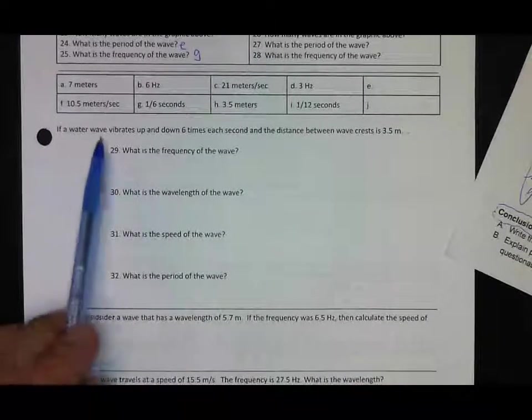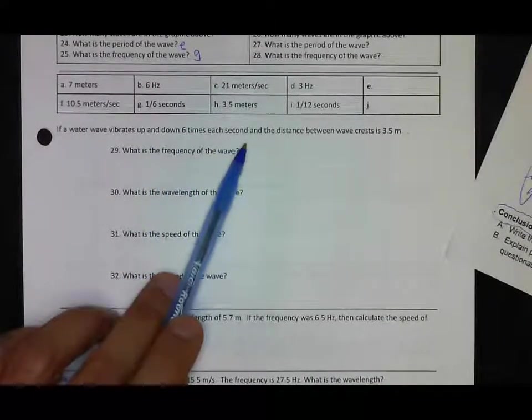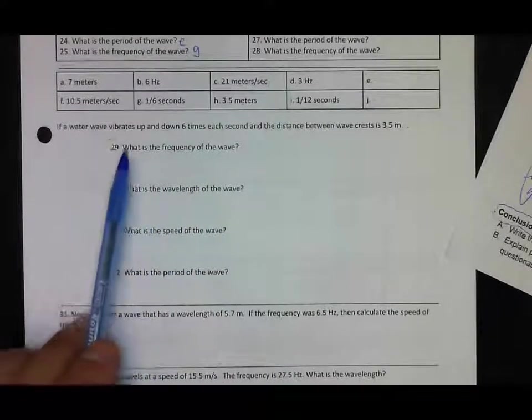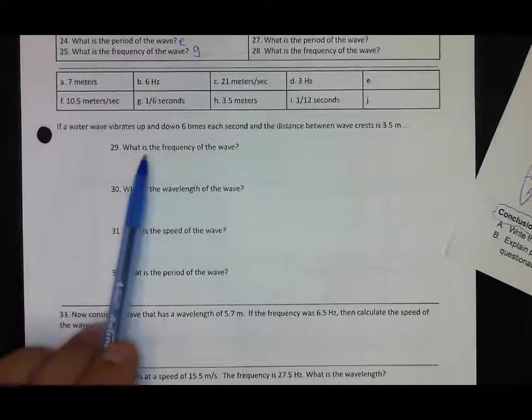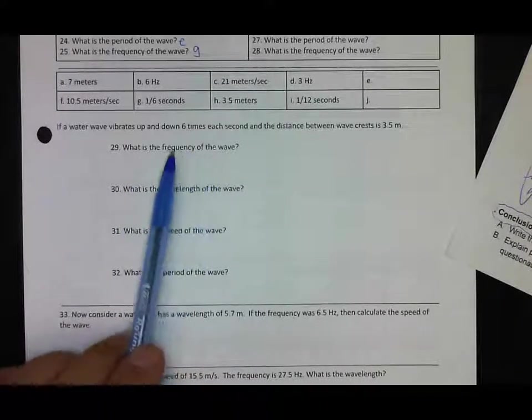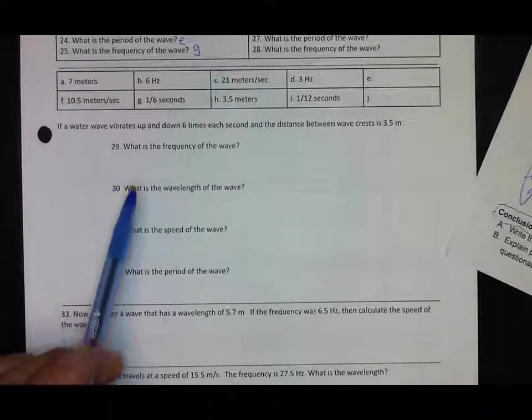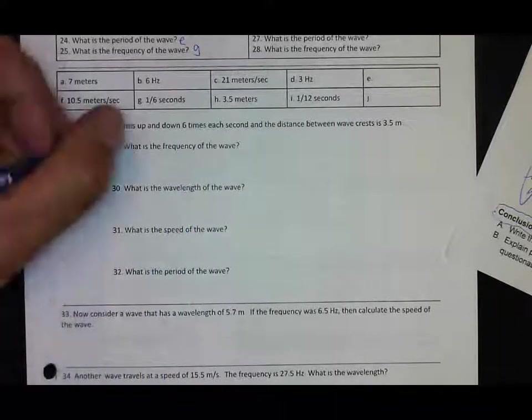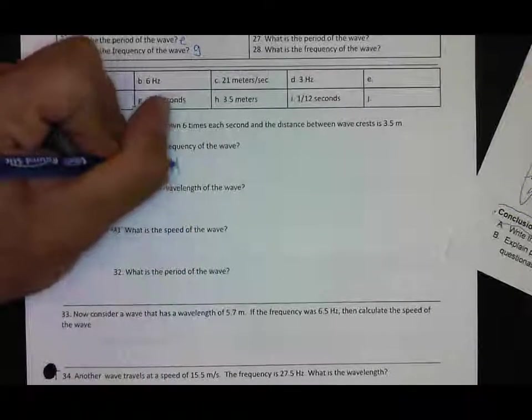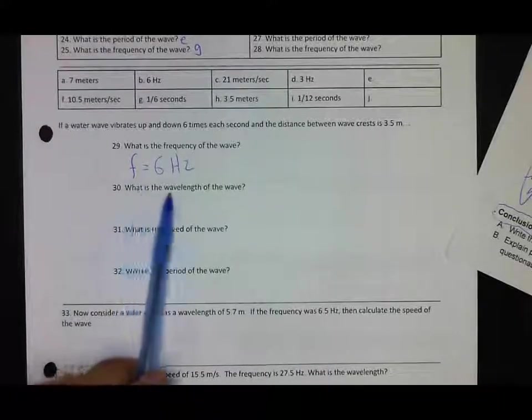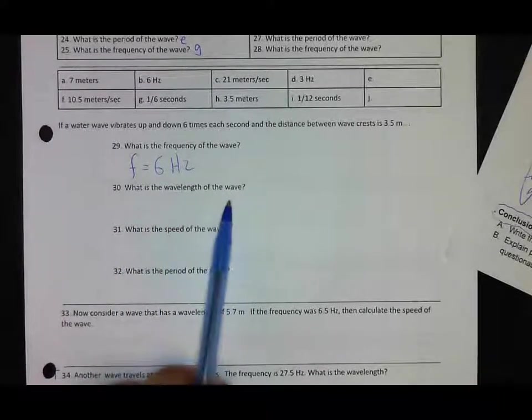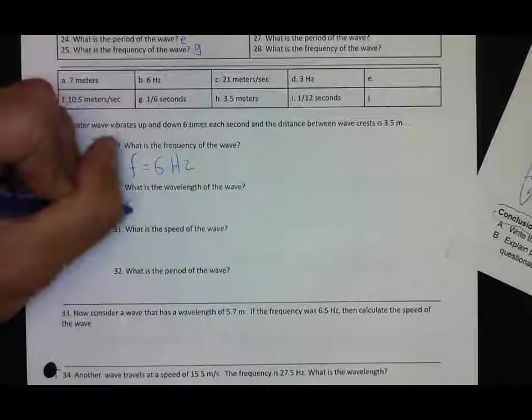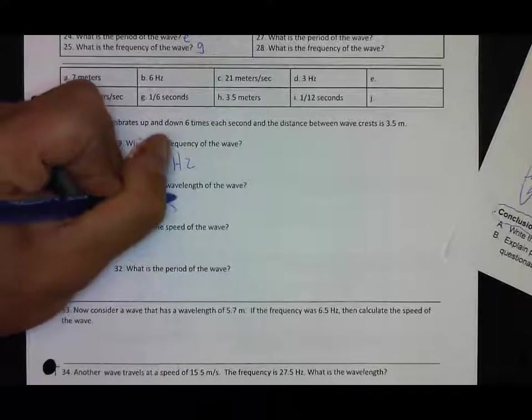If water vibrates up and down six times each second and the distance between the crests is three meters, then that's information given. Now I have to look at these questions. What is the frequency? The frequency is how often you're oscillating or vibrating per second. Here it tells you you vibrate up and down six times a second, so your frequency should be just six hertz. What is the wavelength of the wave? That's the distance between two crests or two similar points in a wave, so your wavelength is equal to 3.5 meters.